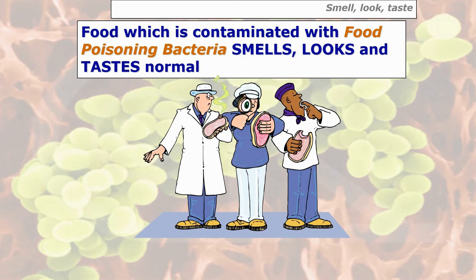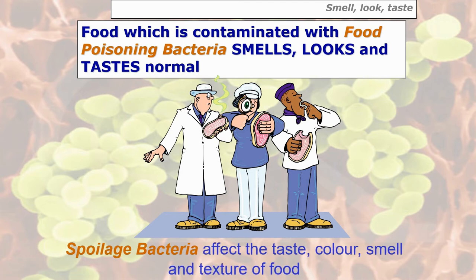There is another group of bacteria which does affect food and leaves different smells and colors — they are called spoilage bacteria. So we've got two different types: food poisoning bacteria, which can make you ill or kill you but don't affect the smell, look or taste of food, and spoilage bacteria, which do affect taste, color, smell and texture but won't cause food poisoning.